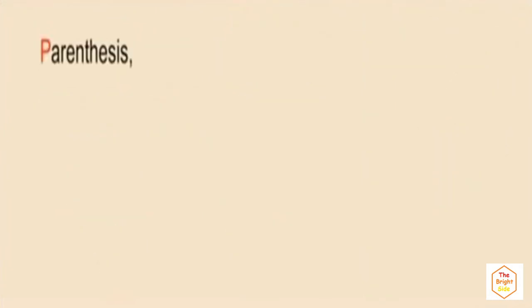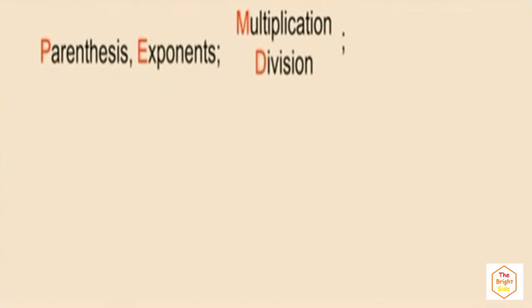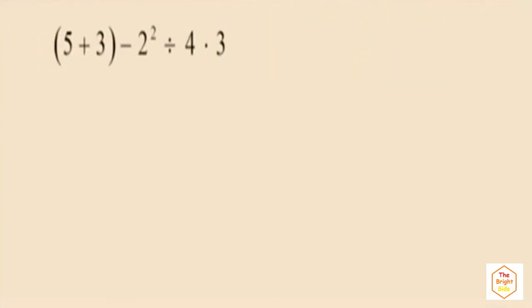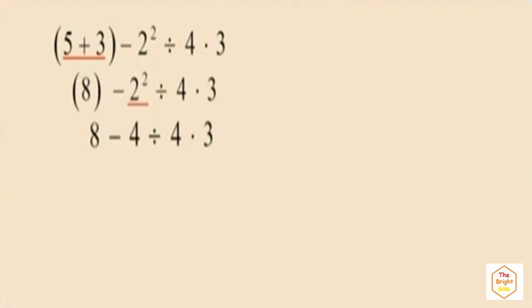Here's a full PEMDAS problem. We have parentheses: five plus three is eight. We don't require parentheses around the positive eight. Then exponents: two squared is four. Next, division comes first — four divided by four is one. Now we have subtraction and multiplication: multiplication must be done before subtraction, so one times three is three. Finally, eight subtract three is five. That is our final answer.